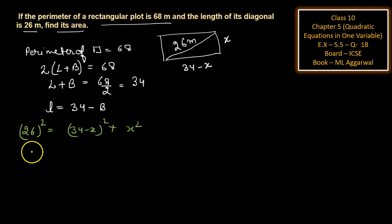26²=676 equals, applying the identity (a-b)²=a²+b²-2ab, we get 34²=1156 plus x² minus 68x plus x².